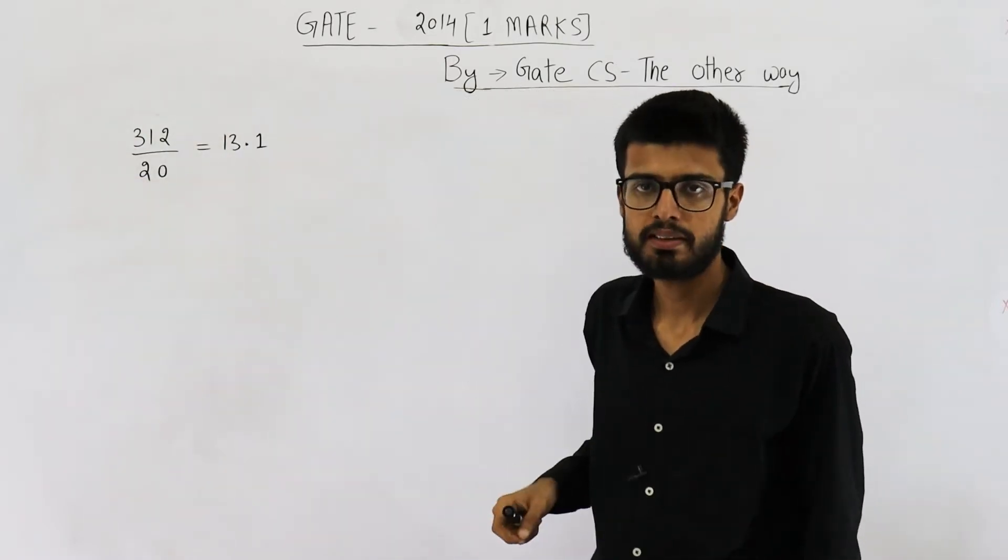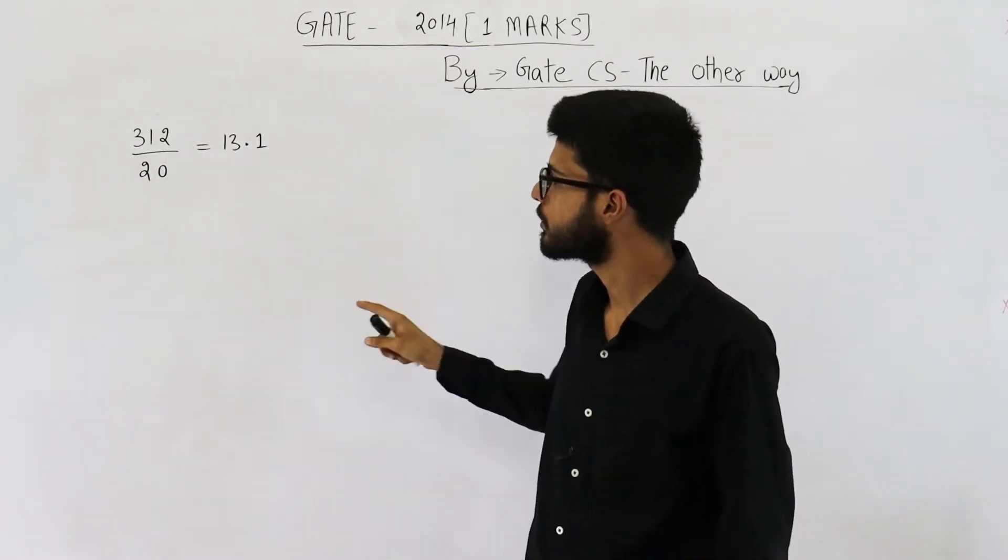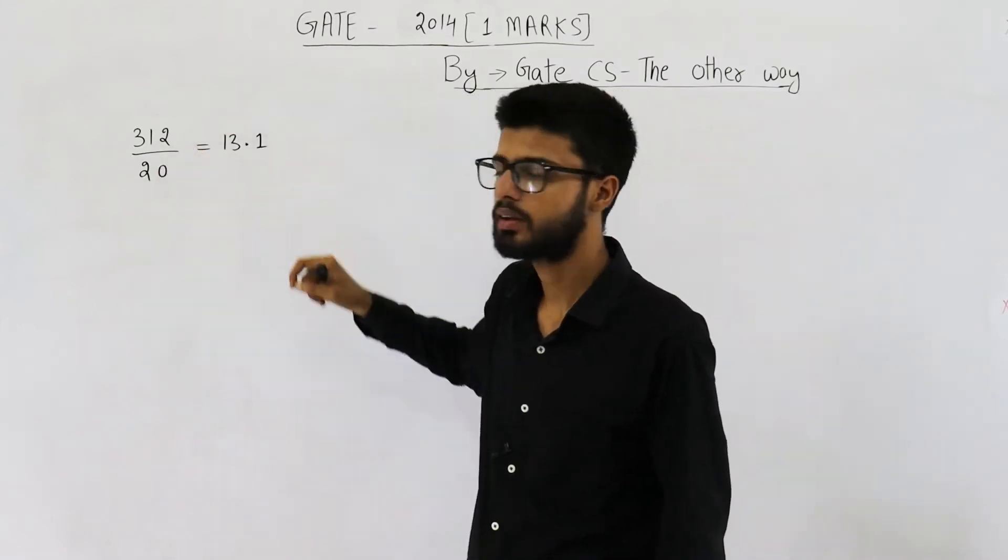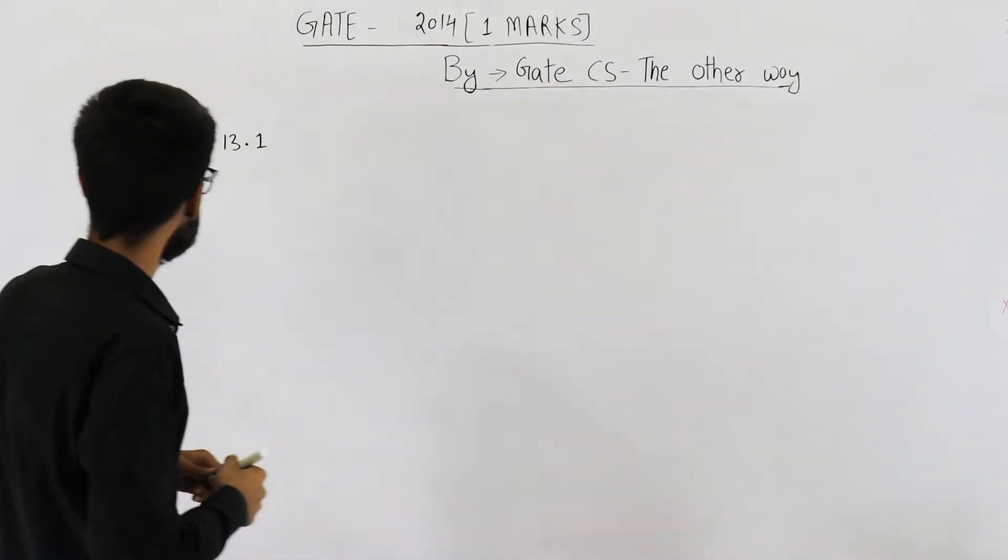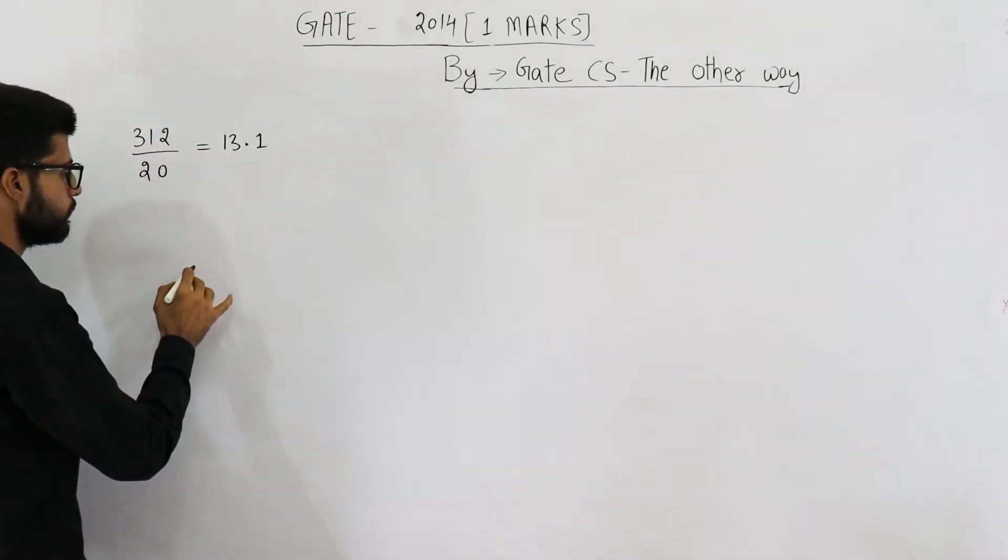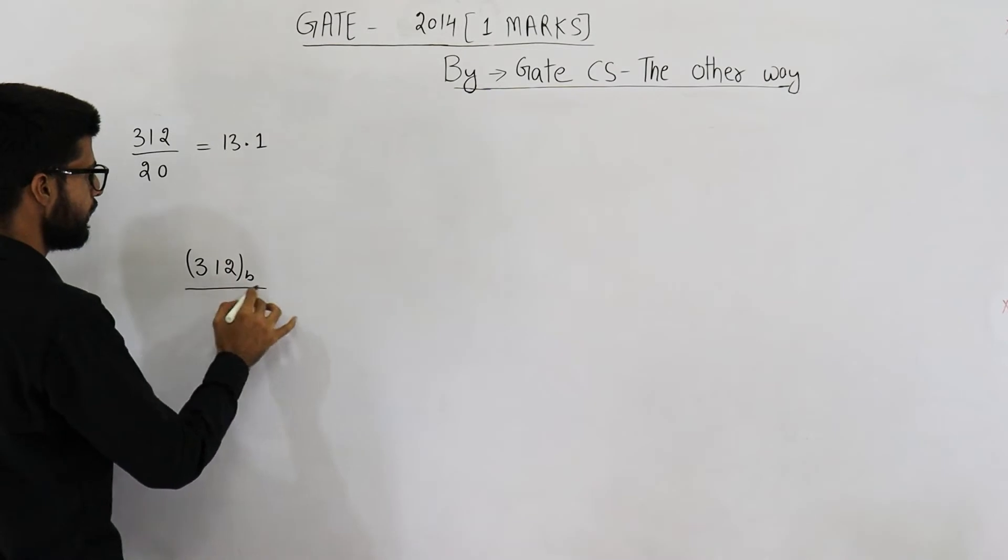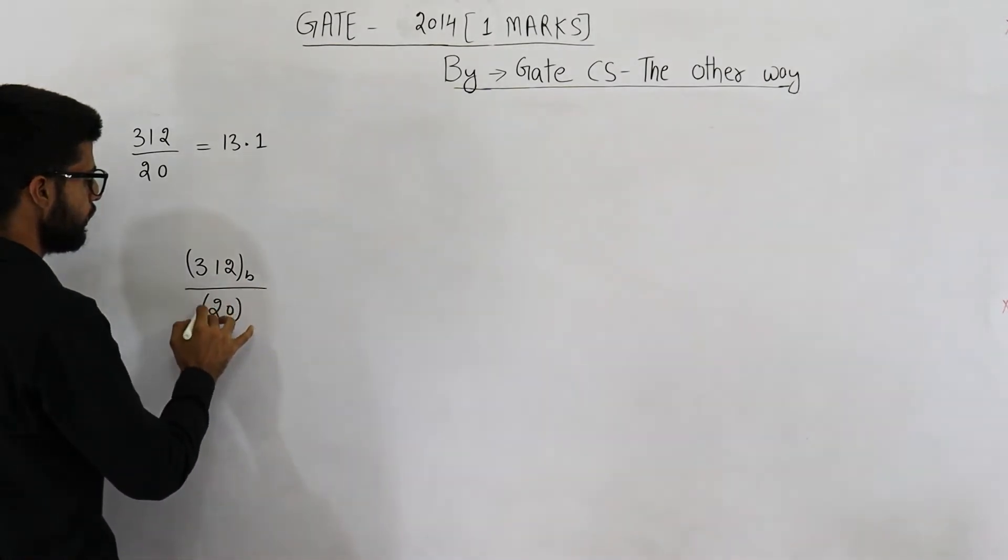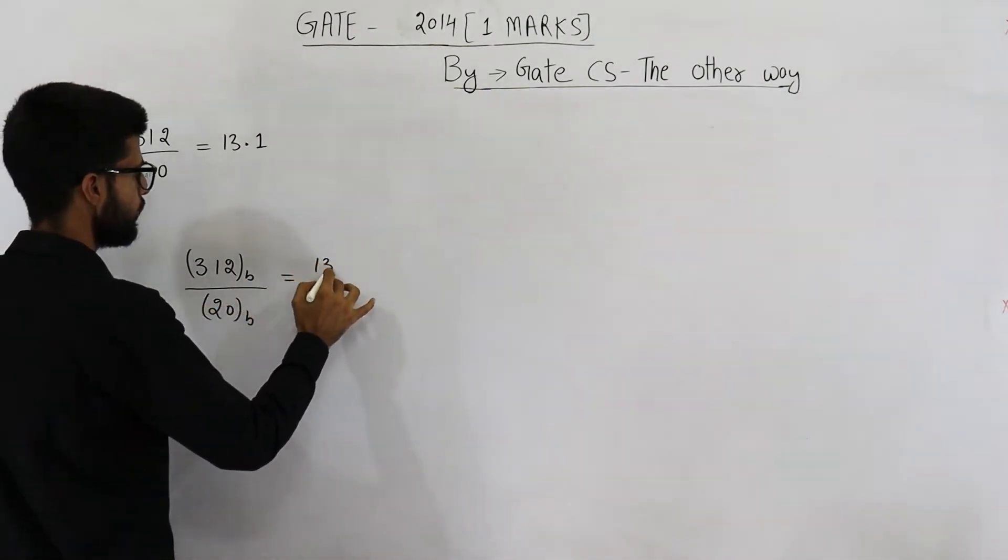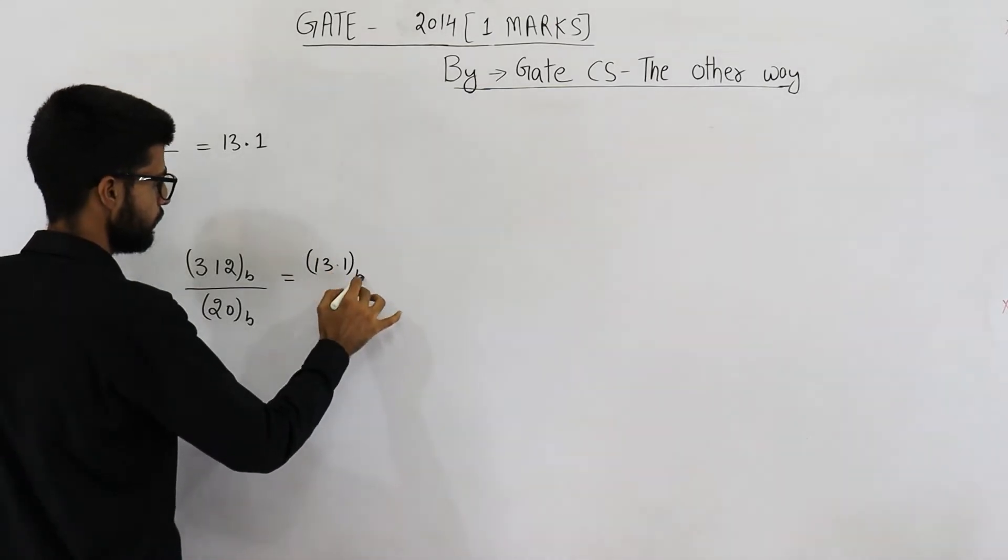Let us assume that base is b. So we are saying all of these three numbers are in base b. That means 312 to the base b divided by 20 in base b will result in 13.1 in base b.